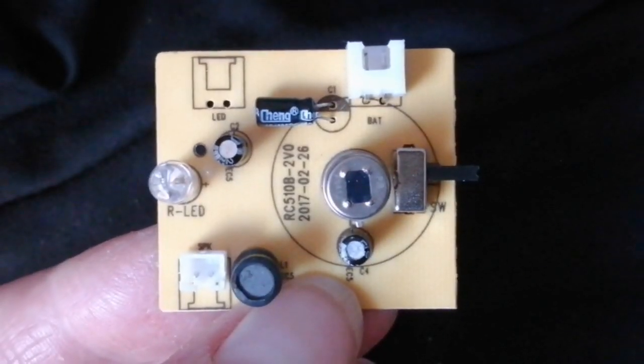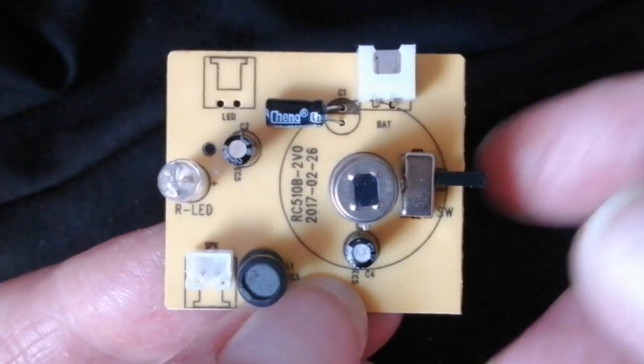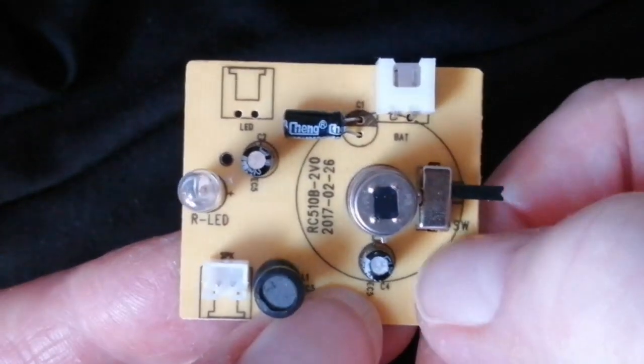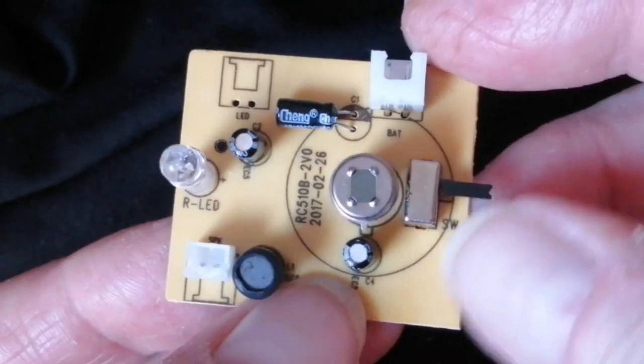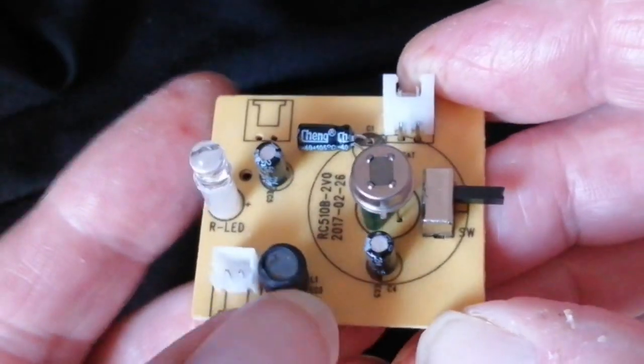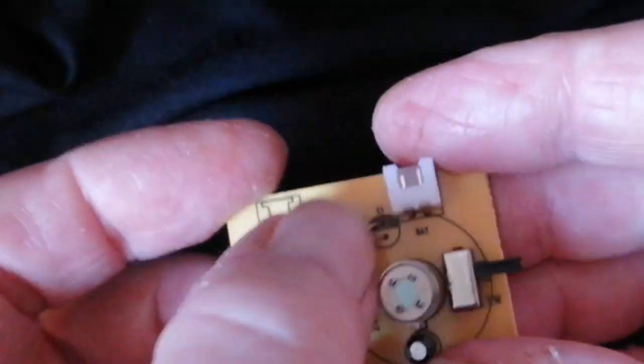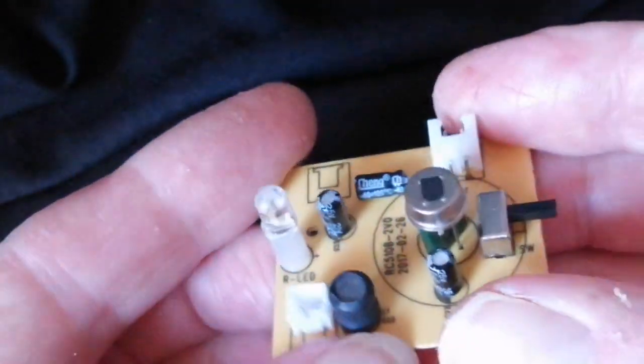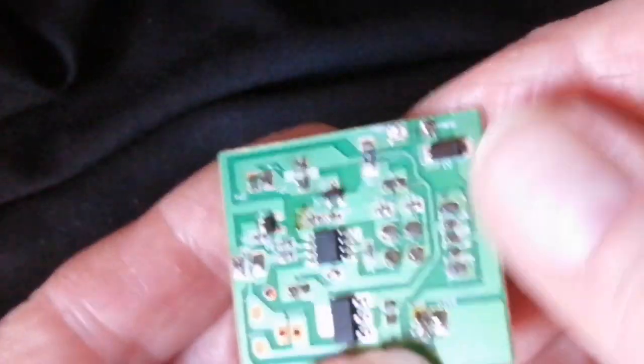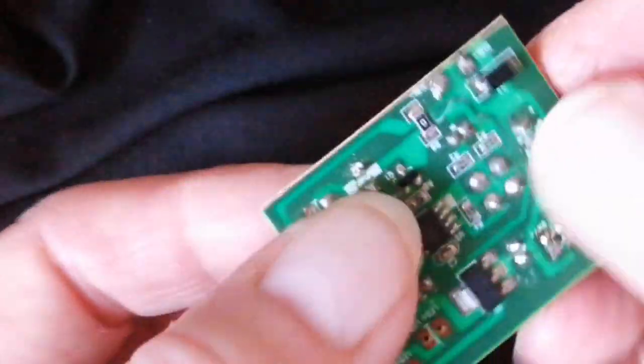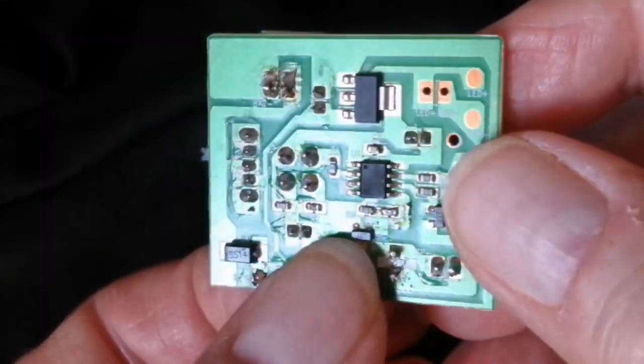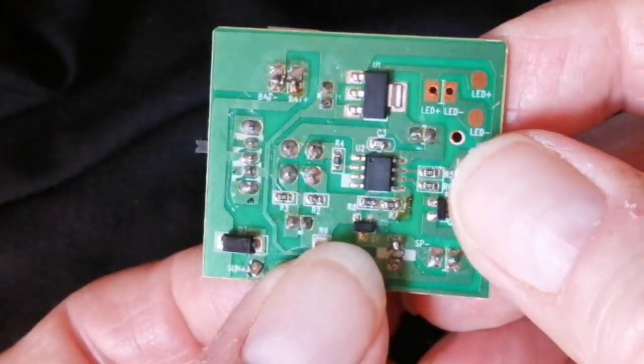It's a single sided board, sort of paxoline sort of material. And it's single sided with some through hole components on the top and most of the gubbins is on the bottom here. Surface mount devices.